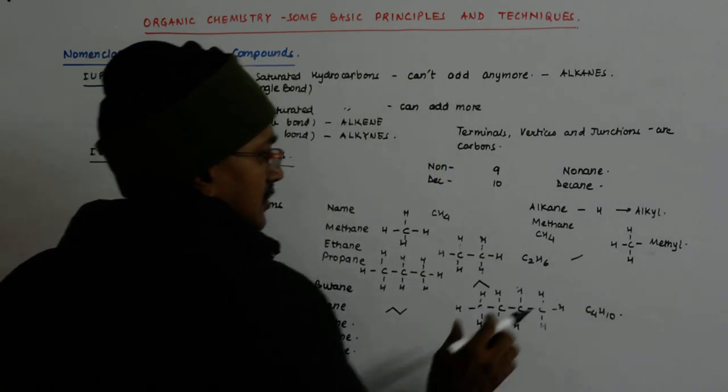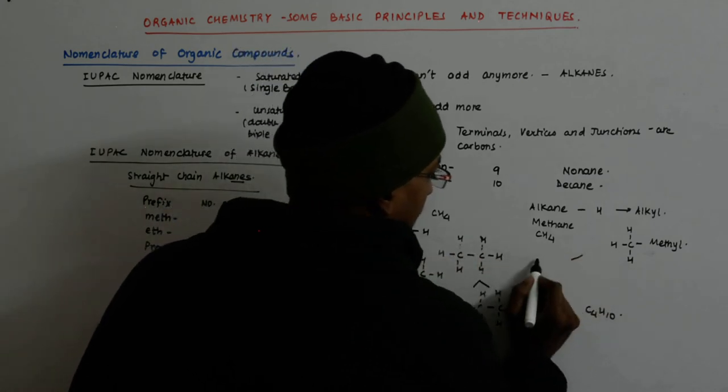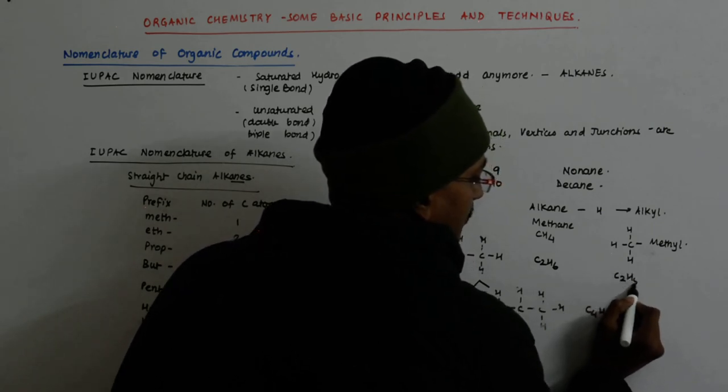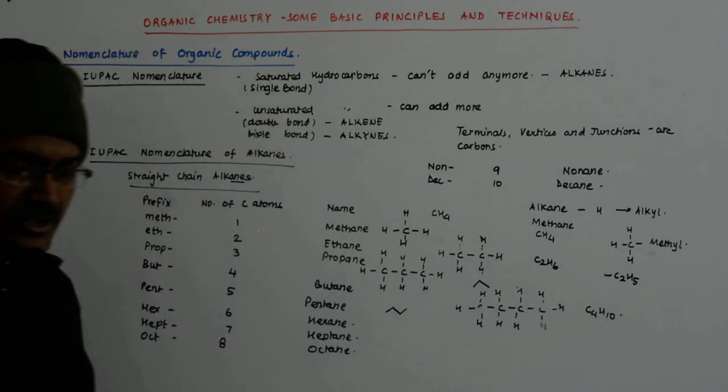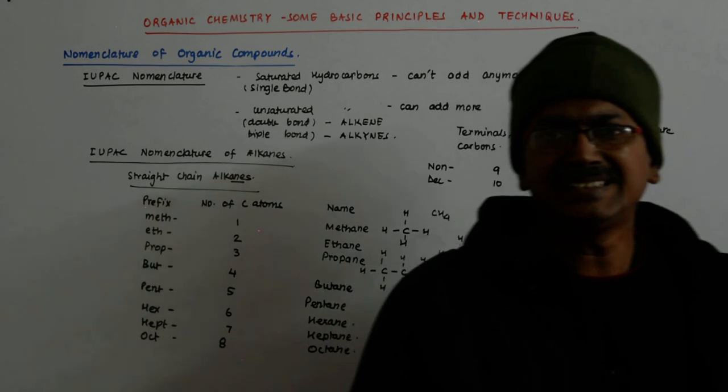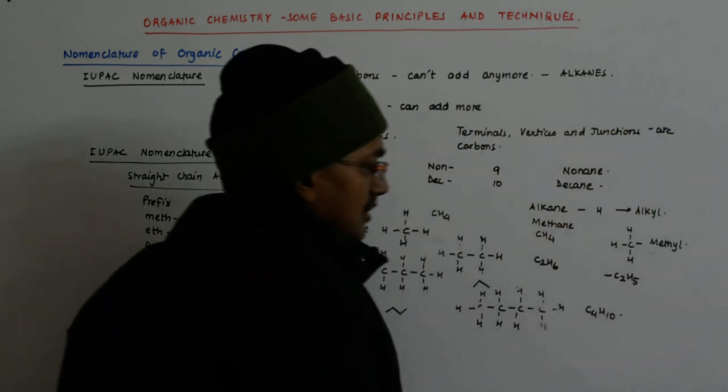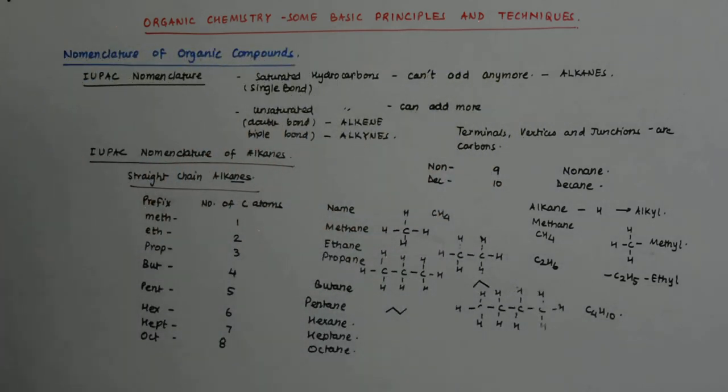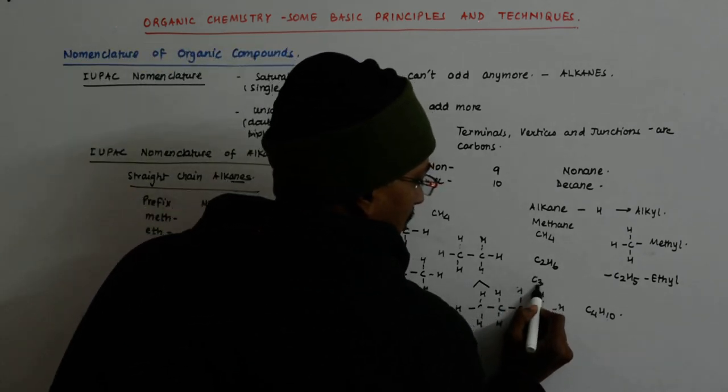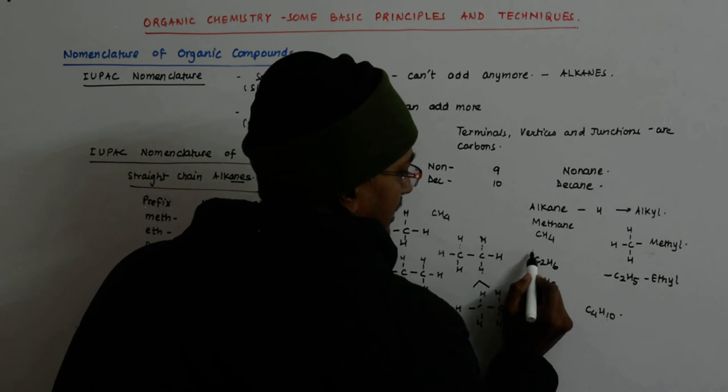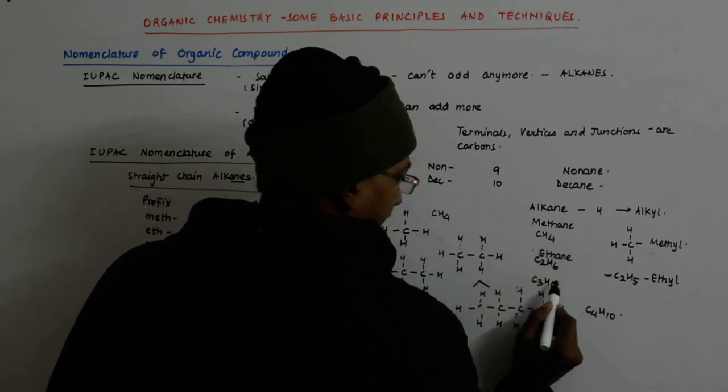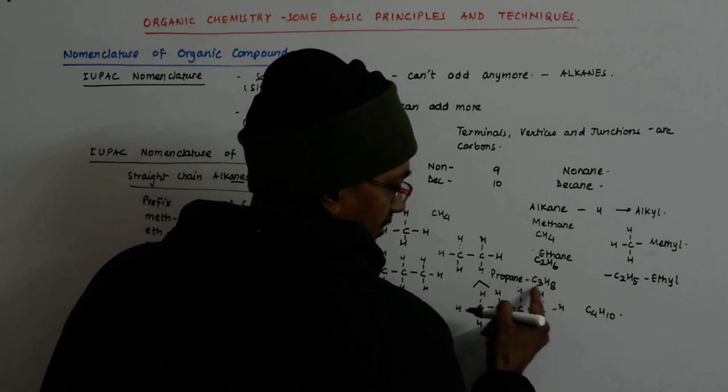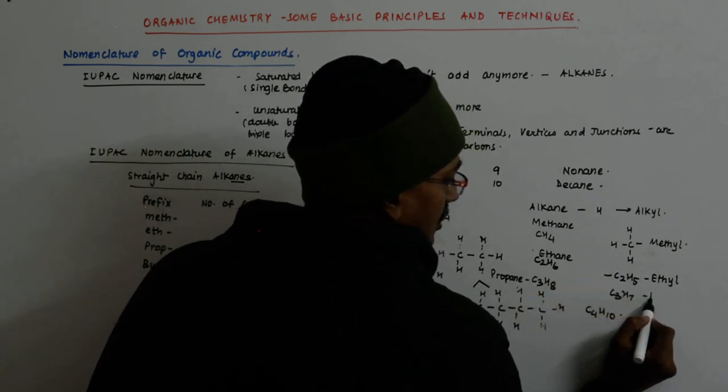So, this becomes methane becomes methyl. This was ethane, C2H6, this becomes C2H5, and you show a connection. The connection has to be with one of the C's. One of the C gets connected. So, this becomes an ethyl, methyl ethyl. C3H8, this is propane. This becomes C3H7, propyl.